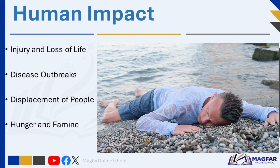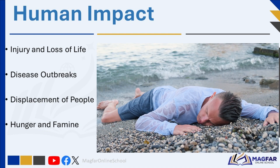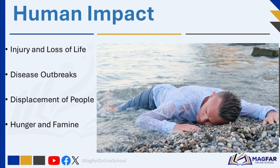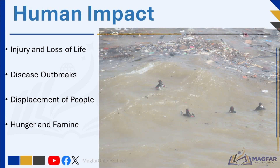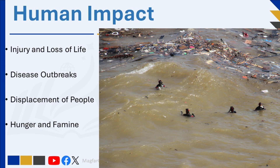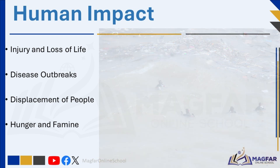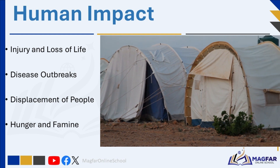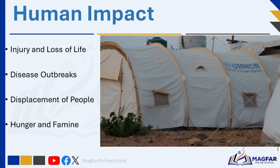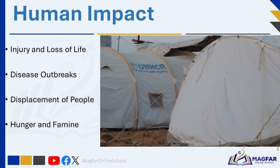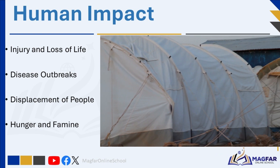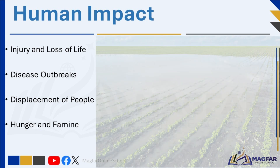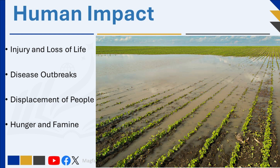Floods can result in injury and loss of life — rapidly rising floodwaters can put lives at risk, leading to drowning, injuries, and fatalities. Disease outbreaks can happen because of flooding; floodwaters contaminated with diseases increase the likelihood of waterborne diseases such as dysentery and cholera, which can spread rapidly among affected populations. Floods force communities to evacuate, causing displacement and leaving homes and belongings behind, which can lead to homelessness and the establishment of refugee camps. Floods have the potential to destroy crops and livestock, resulting in food shortages and lack of access to safe drinking water, contributing to hunger and famine in affected areas.